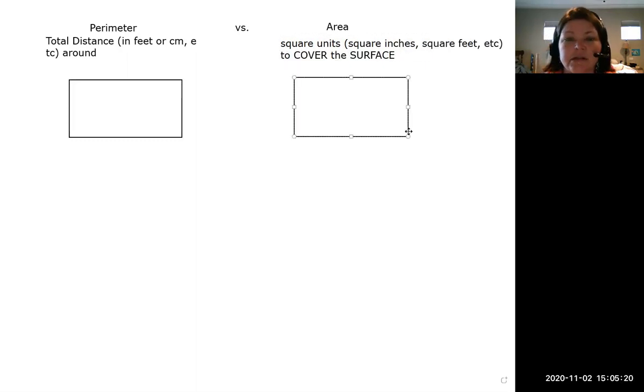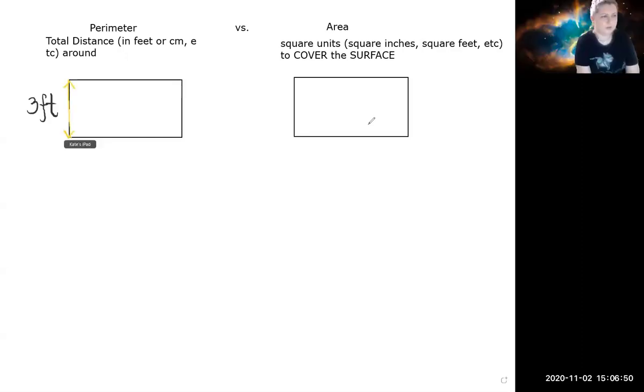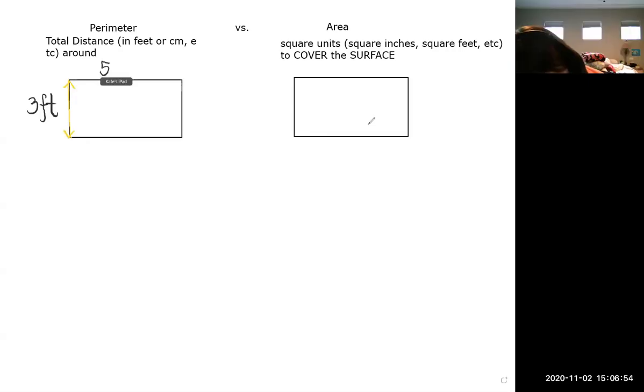Let's look at the exact same shape two different ways. So you told me that perimeter was the total distance around. So let's imagine that we have a three by five shape and we're walking around it. Okay, so let's do three feet by five feet. Now you told me that I'm going to walk around it. So let's do that. If I walk this length, how long have I walked?